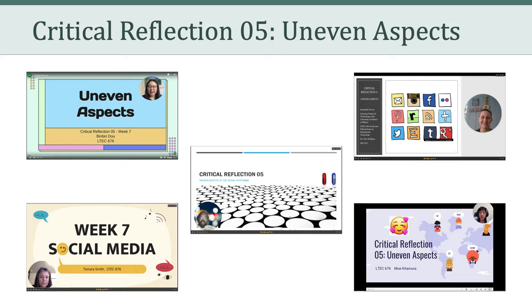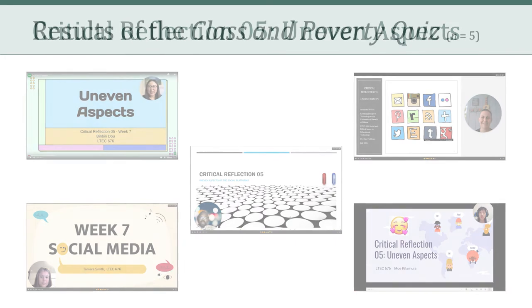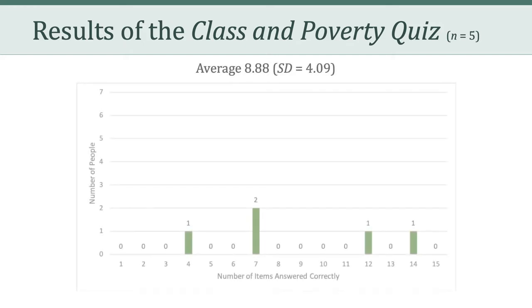Critical Reflection 5 asked you to connect a lot of dots, one of which was the Class in Poverty quiz. So let's take a minute to review the results of that quiz. As you might recall, there were 15 questions, and as you can imagine, there were a lot of different scores. The class average based on 5 respondents was 8.88 out of 15, which is about 60%, and there was a large standard deviation of over 4.0 — that's a pretty big spread.